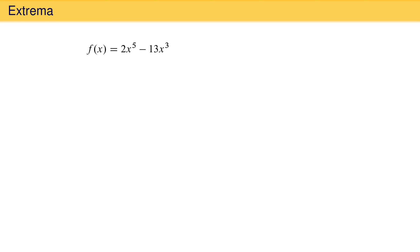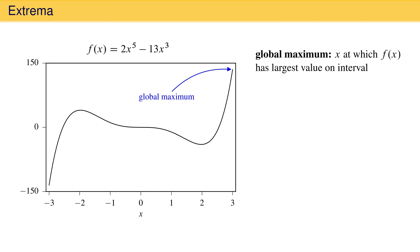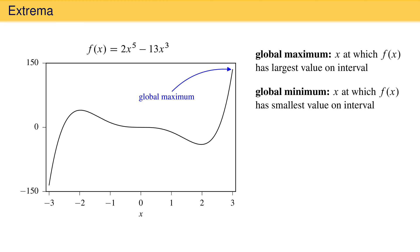One of the common applications of derivatives is to find the x-coordinate at which a function has its largest or smallest value. To think about this, let's look at the function 2x to the fifth minus 13x cubed plotted on the interval negative 3 to positive 3. In this interval, the largest value of the function occurs on the far right at x equals 3. This is called the global maximum — the x-coordinate at which the function has its largest value on the entire interval. Likewise, the global minimum is the x-coordinate at which the function reaches its smallest value on the entire interval. The plot indicates that the global minimum occurs on the far left at negative 3.